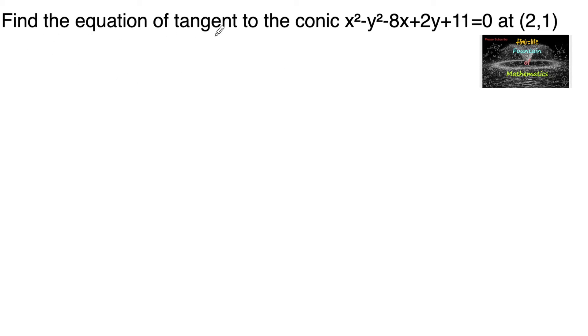Find the equation of tangent to the conic x squared minus y squared minus 8x plus 2y plus 11 equals to 0 at the point (2, 1).